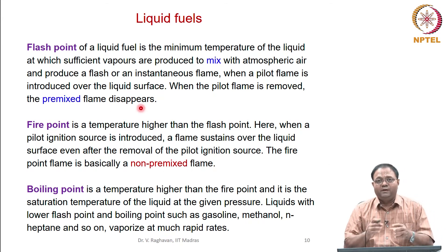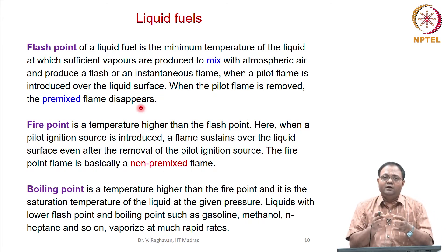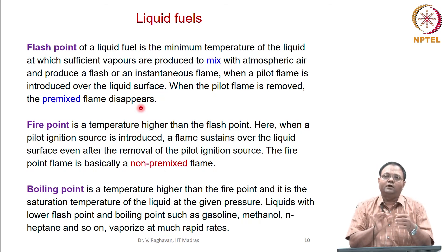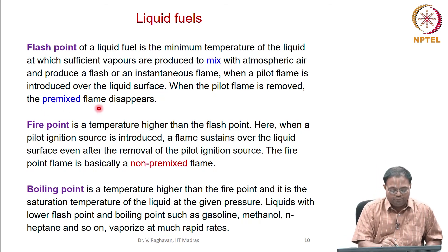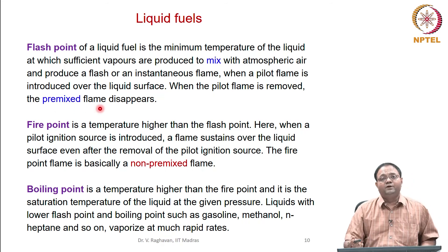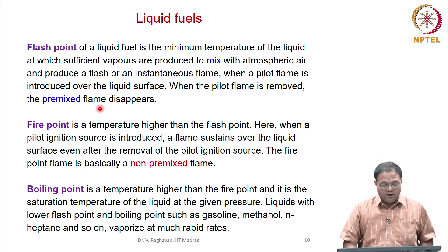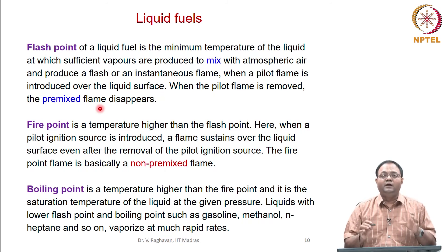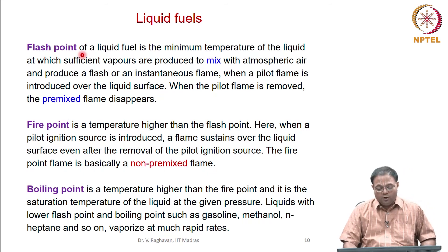At the flash point temperature, sufficient vapor has generated from the surface, mixed with atmospheric air, and a cloud of reactant mixture forms over the surface. Upon bringing an ignition source near it, it instantly burns and produces a flash — a premixed flame forms and disappears. The liquid must reach this minimum temperature called the flash point for this to occur.